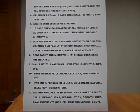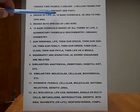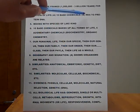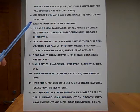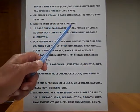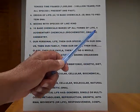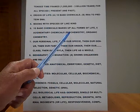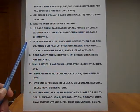We'll go to number four, the origin of life. A: All life forms are made of chemicals — that is, they have 16 base chemicals. B: RNA to protein, DNA. Number five: mixing with species of like kind. Six: 16 base chemicals make up all forms of life; six augmentary chemicals, biochemicals, are also part of life in the sense of biochemistry and organic chemistry.